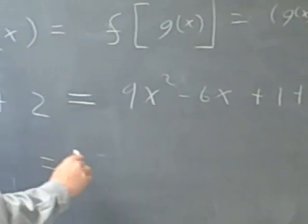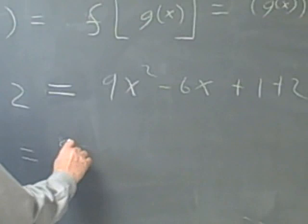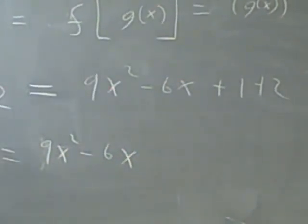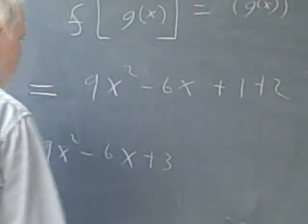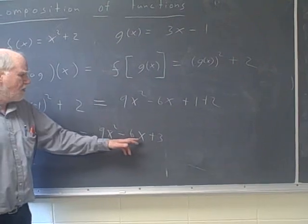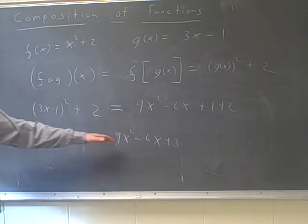And my final answer is, well, let me do that a little better. I should bring some erasers. 9x squared minus 6x and then plus 3. So we say that f of g of x is 9x squared minus 6x plus 3, this quadratic.